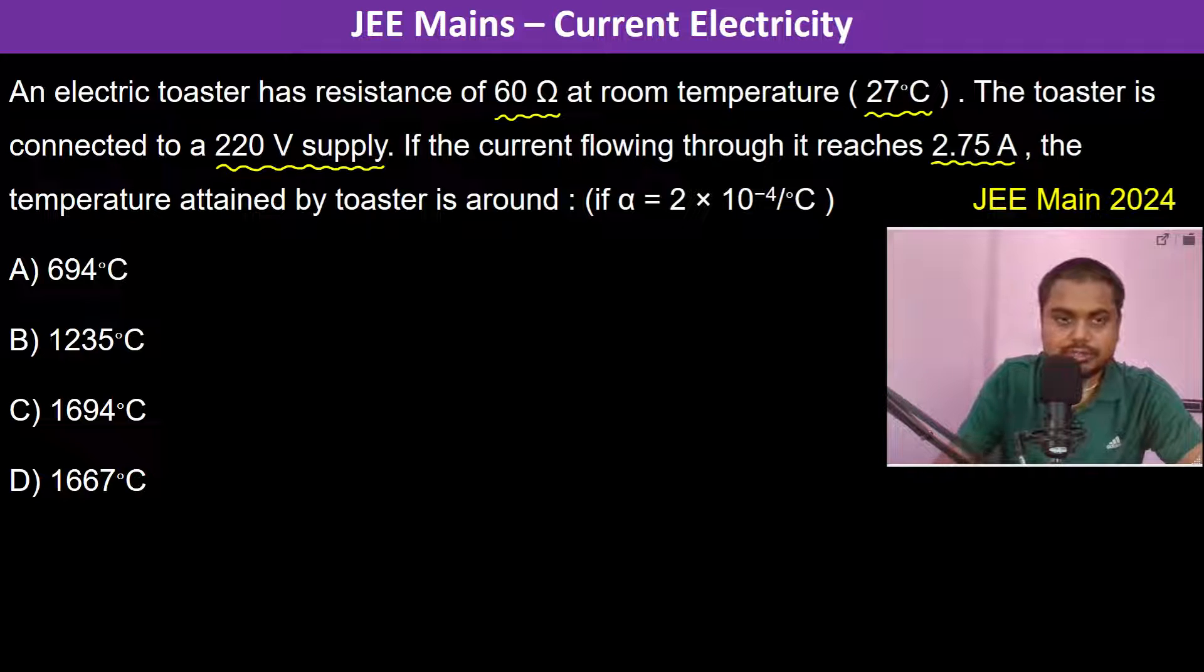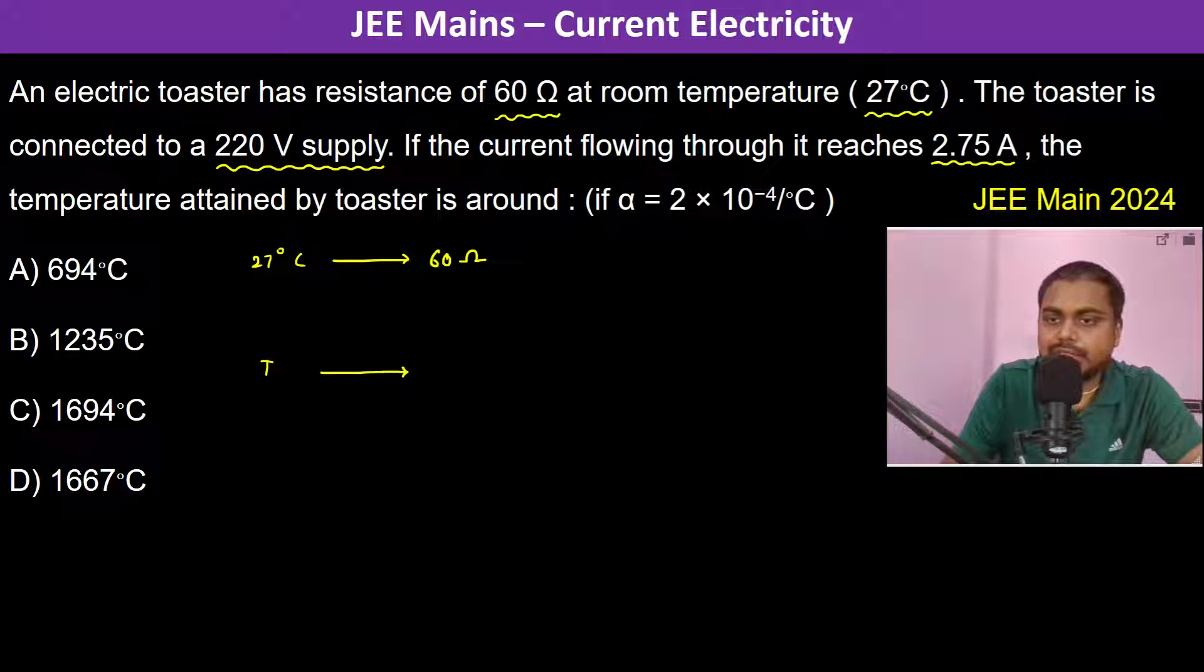So at 27 degrees Celsius it has a resistance of 60 ohms. Now at a temperature T, it has a resistance of how much? So the current is like this, this is now the current...